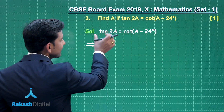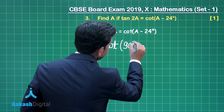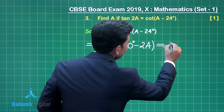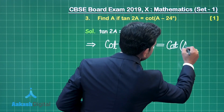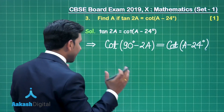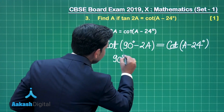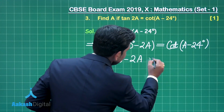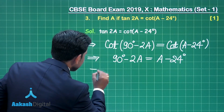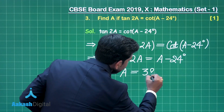We can easily convert tan 2a as cot(90° − 2a), and on the right hand side we have cot(a − 24°). When we compare both sides of this given equation, we obtain 90° − 2a = a − 24°. After further simplification we obtain the value of a as 38°.